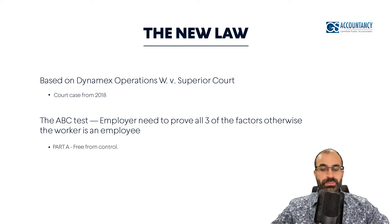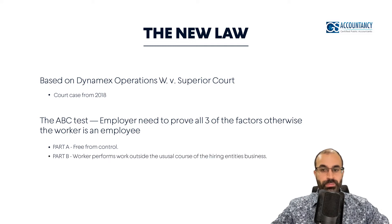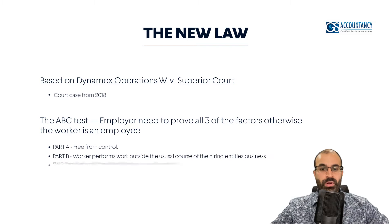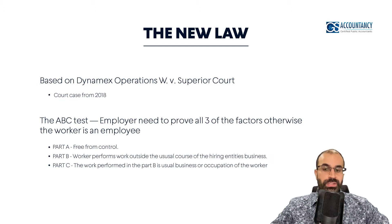Part A is that a worker needs to be free from control. Part B is that the worker performs the work outside the usual course of the hiring entity's business — this is the part we are focusing on as this is the biggest concern right now. Part C is that the work being performed by the worker is the worker's usual business or occupation. All three parts need to be satisfied in order for the hiring entity to prove that the worker is not an employee.